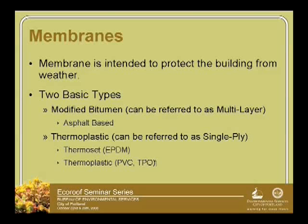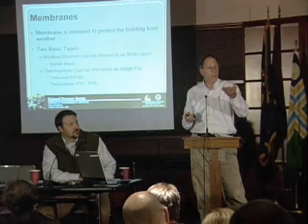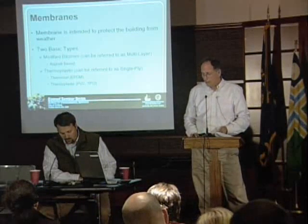So what kind of membrane is associated with those different conditions? Just to give you an idea: membranes are intended to protect the building. There are two basic types we're referring to. A modified bitumen, where the asphalt has been modified with a petroleum waste product that gives it more elasticity, making it a better product. And then there are thermoplastics, also referred to as single plies. Thermal set is EPDM. The acronyms — EPDM, TPO, PVC — are typically a single layer, pre-manufactured, coming in rolls. The modified bitumens often come in liquid and/or rolls, or sometimes both. It might be a liquid covered with a cap sheet.